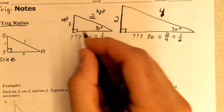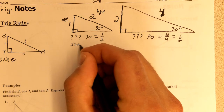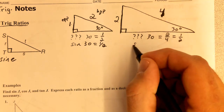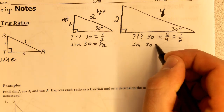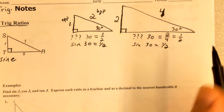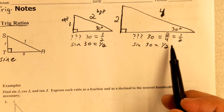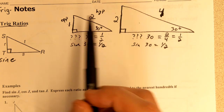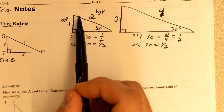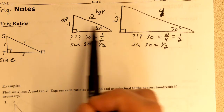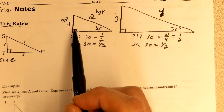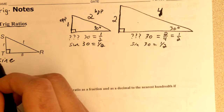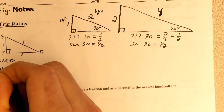We write sine abbreviated as 'sin.' So sin(30) = 1/2, and that's always true — sine of 30 is always one half. Sine is the name for the ratio of the opposite side to the hypotenuse. There are three trig ratios we'll talk about: sine, cosine, and tangent.